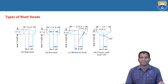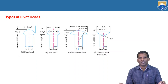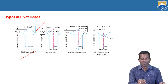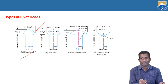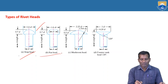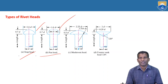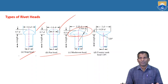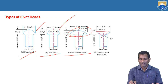In riveted joints, the types of rivet heads are shown in this slide. Different types of rivet heads exist according to their dimensions and shape — the main thing is the geometry of the rivet. The first one is the snap head; its shape is shown in the diagram, with height 0.7D and total diameter of the head 1.6 times D. Similarly, pan head — the shape is shown in the diagram. A mushroom shape type head is also there, and the counter sunk head has an angle of 120 degrees.